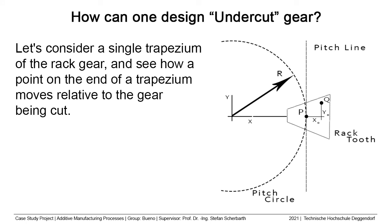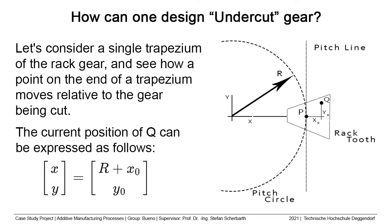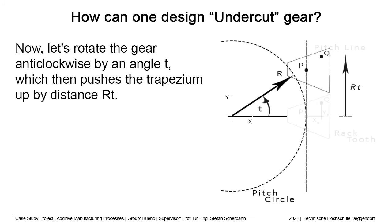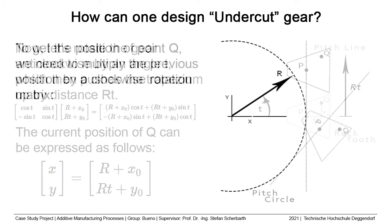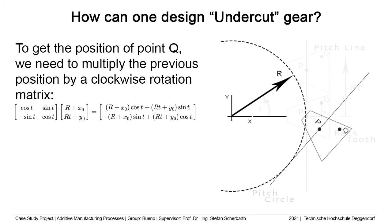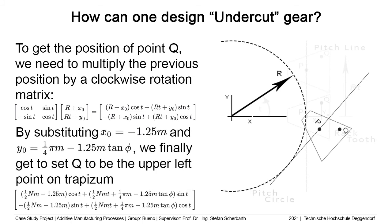Now we will take a general point Q that lies on the trapezium. The current position of Q can be expressed as follows. Now let's rotate the gear anti-clockwise by an angle T, which then pushes the trapezium up by a distance R times T. The updated position of Q can be expressed accordingly. Since we are interested in the motion of Q relative to the gear, we need to rotate the entire system about the origin by angle T clockwise. To get the position of point Q, we multiply the previous position by a clockwise rotation matrix. By substituting the appropriate values, we set Q to the upper-left point on the trapezium, which draws the trochoidal curve.